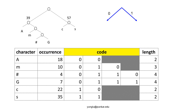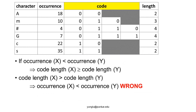From the table and based on the procedure of building the tree, we know the following properties are true. If a character X occurs fewer times than another character Y, then the length of the code for X cannot be shorter than the length of the code for Y. Their lengths, however, may be the same. The other direction is not true: if the length of the code for X is greater than the length of the code for Y, we cannot say that X occurs fewer times than Y — they may have the same occurrences. This table is called the codebook. It allows us to convert a character to its code using 0s and 1s.